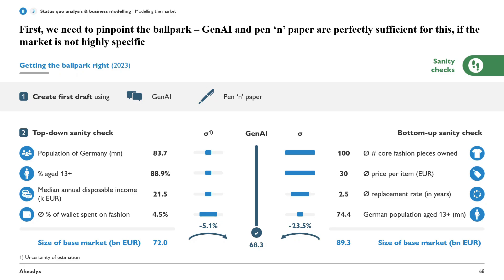Comparing this against the Gen AI direct shot of 68.3 billion, it gets really close — a deviation of about 5%. The error is probably primarily coming from the average share of wallet spent on fashion; the other building blocks are things you can estimate quite precisely. On the right-hand side, the bottom-up sanity check gives 89.3 billion euros, which deviates by about 23.5% from the Gen AI direct shot — a significant deviation.